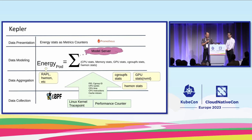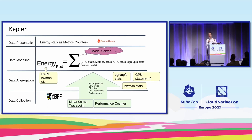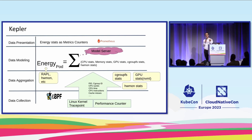Kepler is based on scientific research made affordable through software technologies. Using eBPF at the bottom layer, we collect hardware-level information — hardware counters including CPU instructions, CPU cycles, and cache misses — which scientific research has proven to have strong correlation with software activity. We also collect software information including CPU runtime and memory usage. We need both hardware and software information so Kepler can report energy for both bare-metal and virtual machine environments.